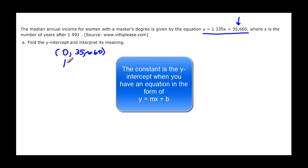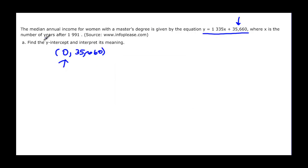Now remember, the x it told us is the number of years after 1991, so it's 0 years after 1991. And the y-value is what the problem is talking about, and that's talking about the median annual income.